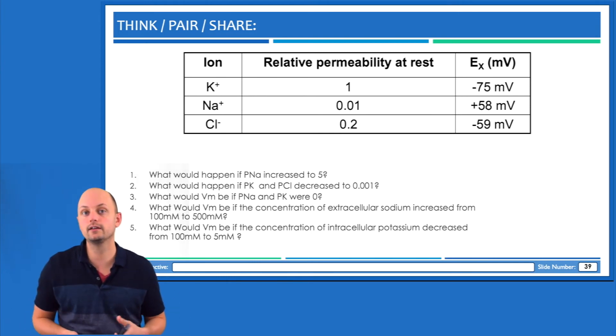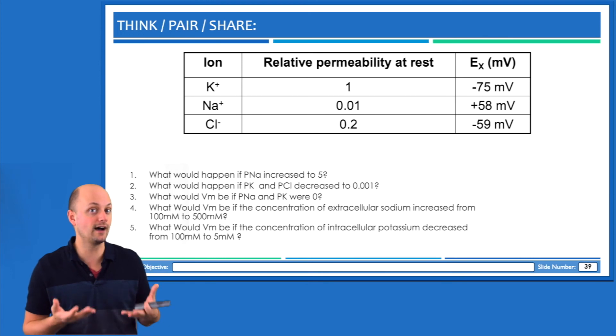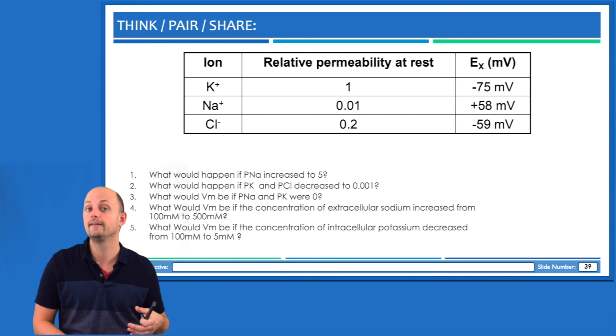So here again are five practice problems dealing with changes in membrane potential, and we are applying the GHK equation. With questions like this, you have to reference the table up at the top, which will remind us of the equilibrium potentials for each of the ions, as well as the relative permeabilities of each ions in the initial conditions.